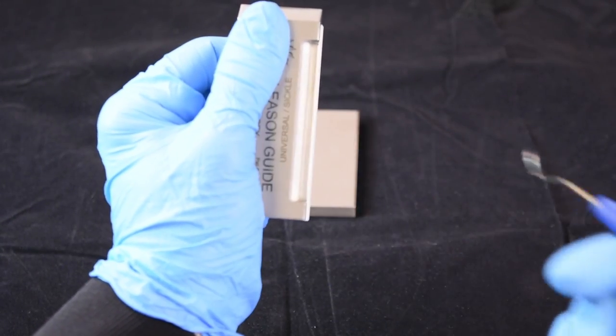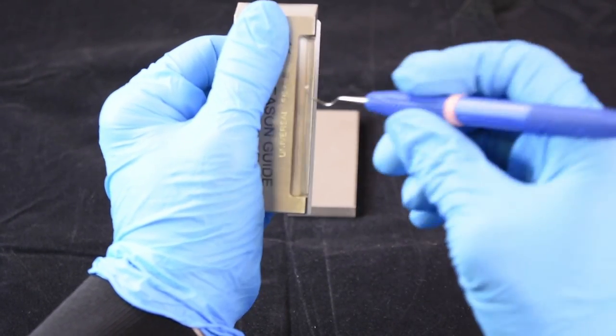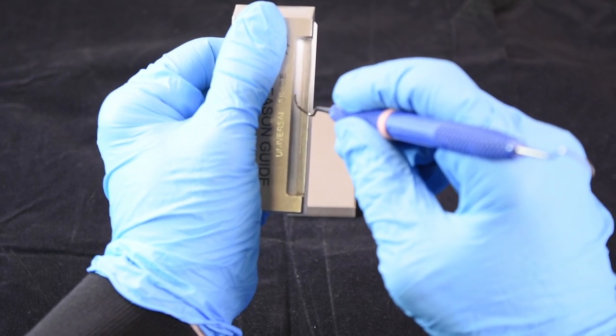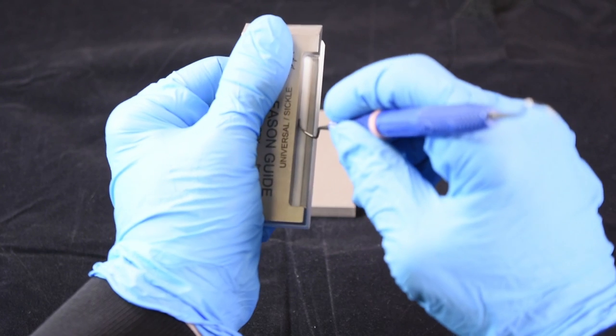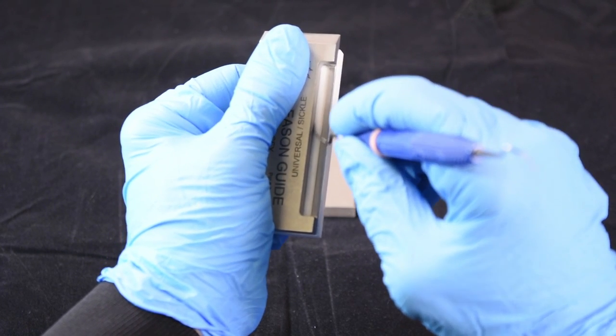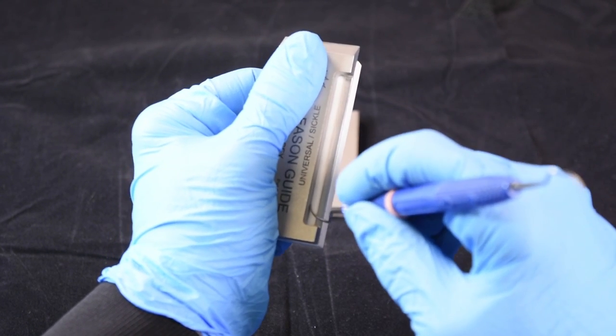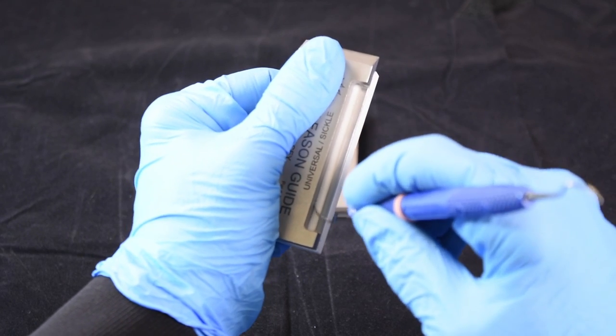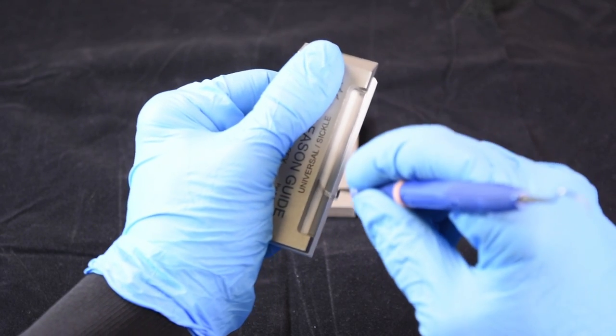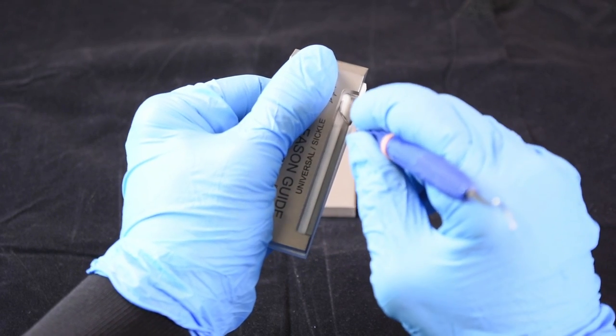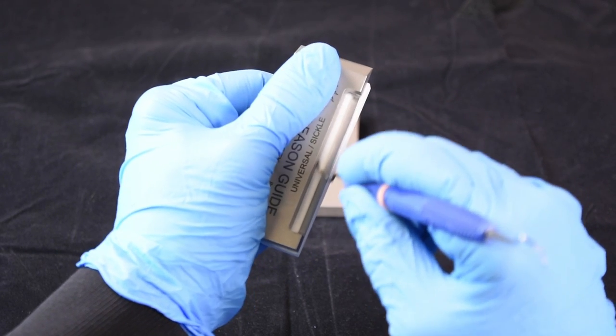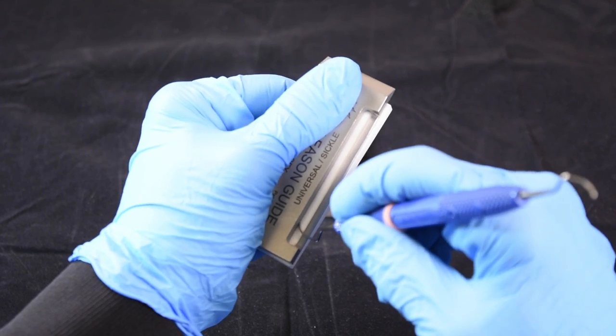Make sure that you have the universal side facing the instrument. Place the back of the blade against the stop, bring the terminal shank down to the rest, and glide. Glide using a pendulum motion so you get the heel and the toe with a nice even pressure.